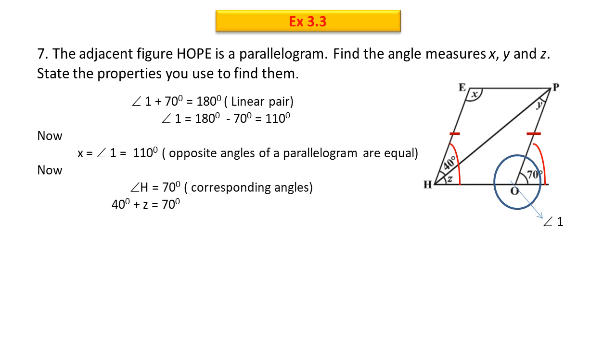So, H is 40 degrees plus z and equals to 70 degrees. So, here we know that z is 30 degrees.